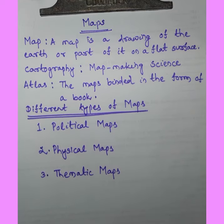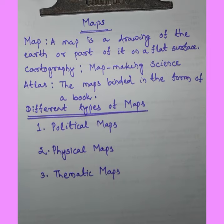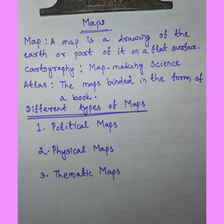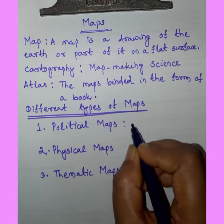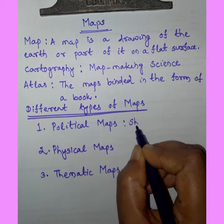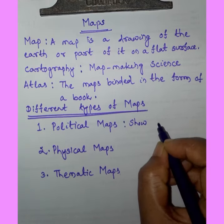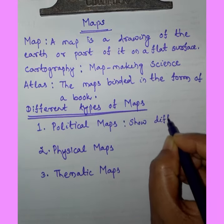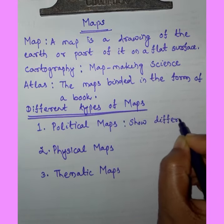Let's discuss the types of maps. Political maps are maps which show different countries, states, cities, towns, and villages in a country.